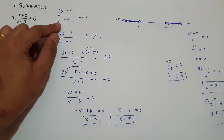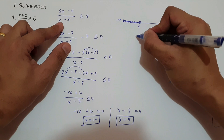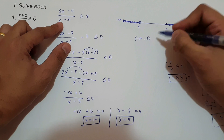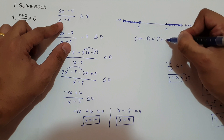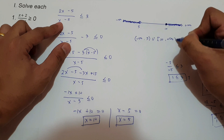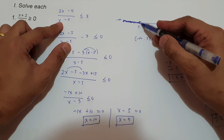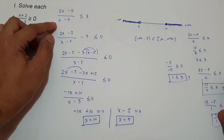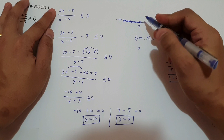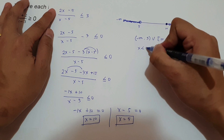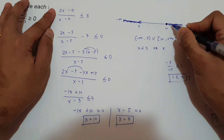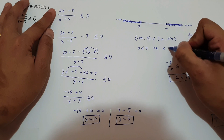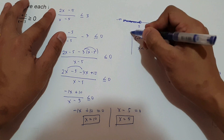How do we write this in interval notation? We have open parenthesis negative infinity up to 5, close parenthesis, union, bracket 10 up to positive infinity — using close parenthesis for the open circle at 5 and bracket for the closed circle at 10. For inequality notation: x less than 5, or x greater than or equal to 10.